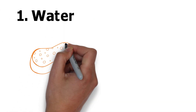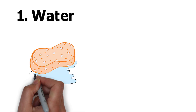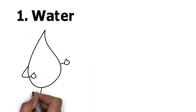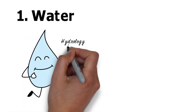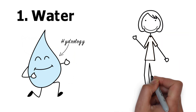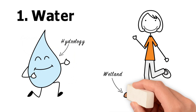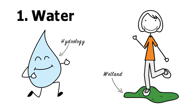Wetlands are areas of land saturated with water. This means that wetlands hold and absorb water similar to a sponge. But not all wetlands are always saturated. The movement of water to and from a wetland is known as its hydrology. While some wetlands are almost always underwater, others are rarely flooded. Many people think of wetlands as muddy, but wetlands can often look dry for much of the year. So all wetlands are wet, but not all wetlands are always wet.